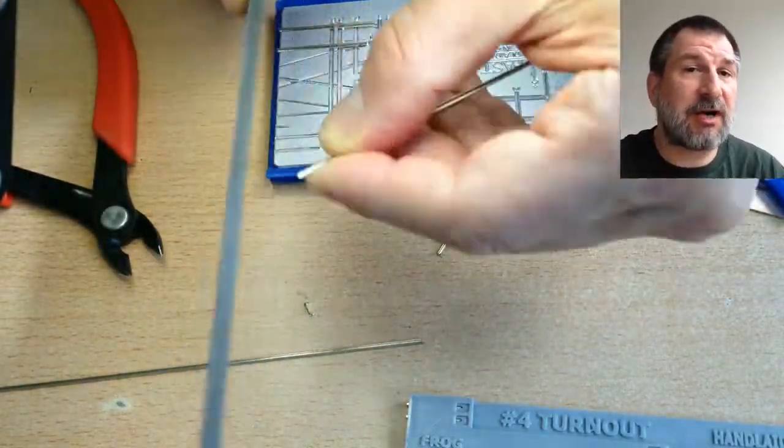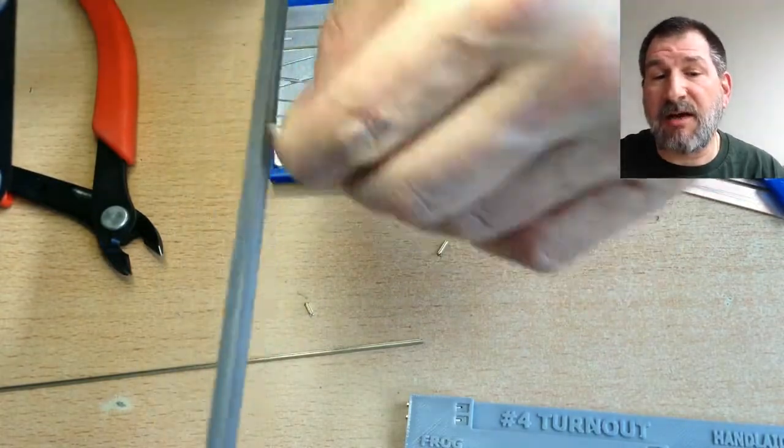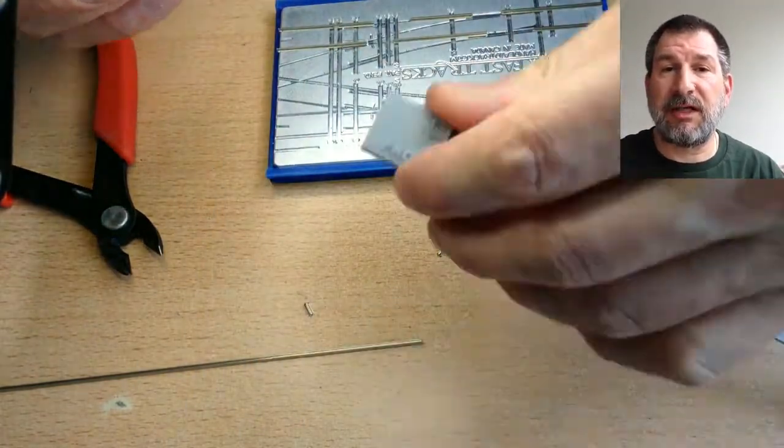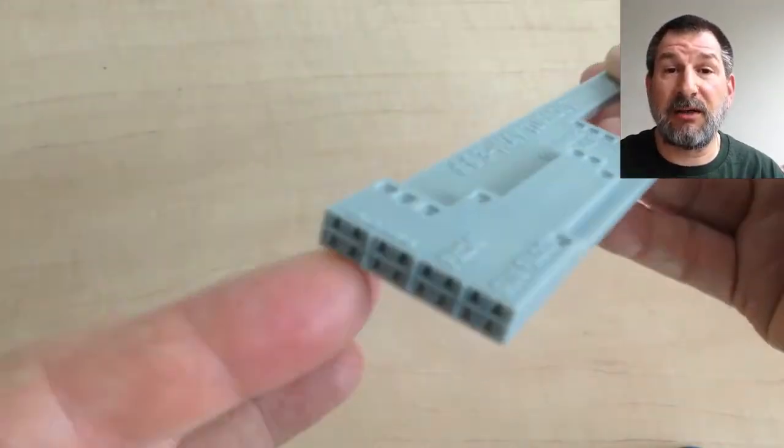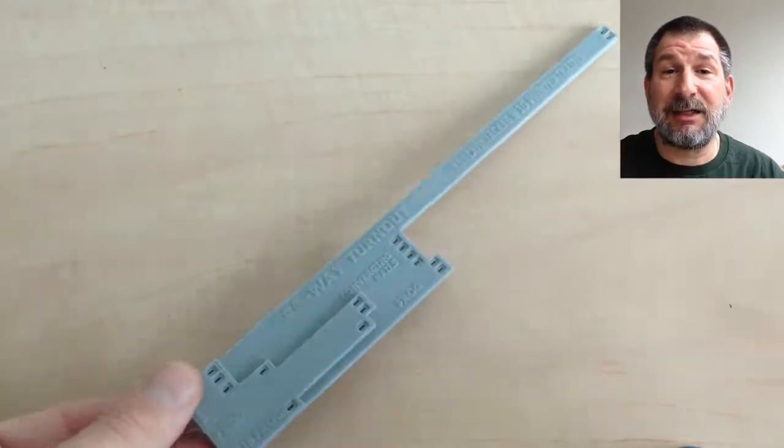A straight track, whatever it is you're trying to build. In this case, I have them set up for the number four turnout and for the number six three-way Y, which has a lot of components.